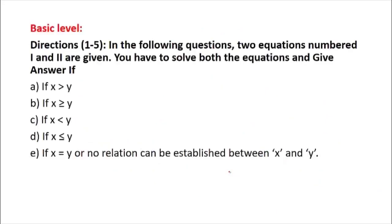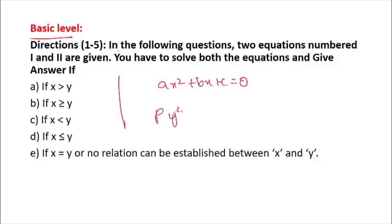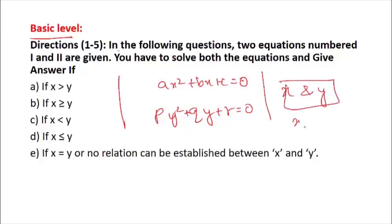Let us begin with the questions. The direction states: two equations numbered (i) and (ii) are given; you have to solve both equations and find the relation between x and y. By relation we mean: x > y, x < y, x ≥ y, x ≤ y, x = y, or no relation can be determined between x and y.